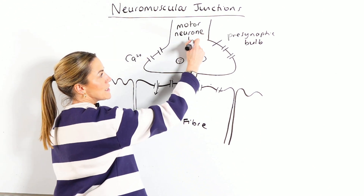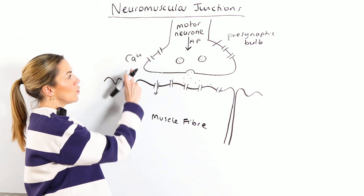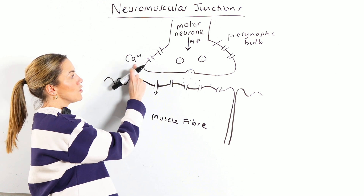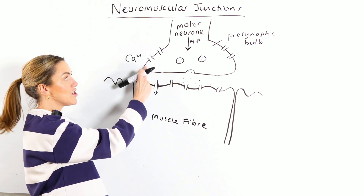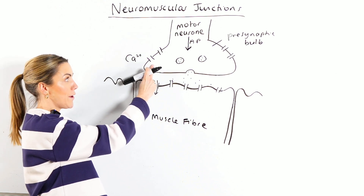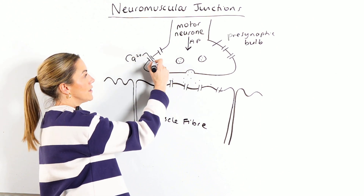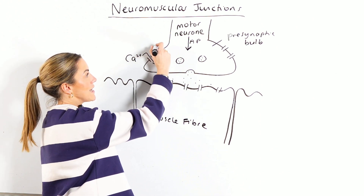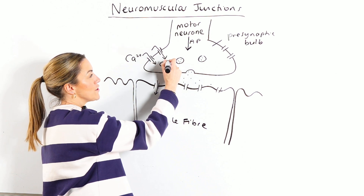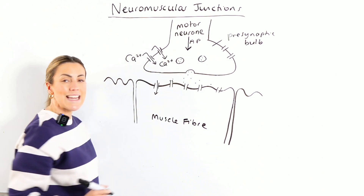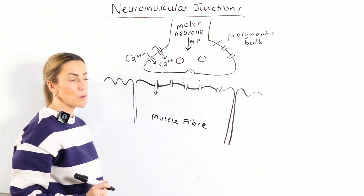When that action potential arrives, it causes these voltage-gated calcium ion channels to open. When the calcium ion channels open, calcium ions are going to diffuse in to the presynaptic bulb.